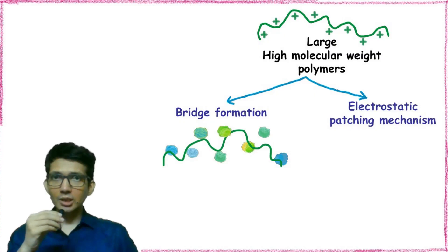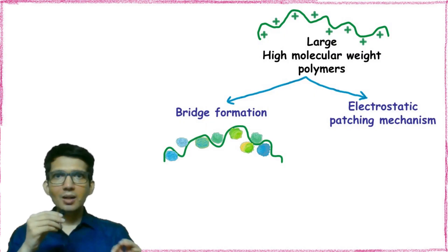In bridge formation, the large polymer binds the tiny suspended particles and forms a bridge between them. Because of this binding, the overall structure becomes heavy and it settles down resulting in flocculation.